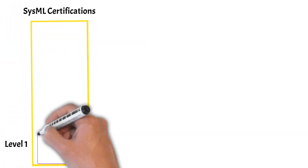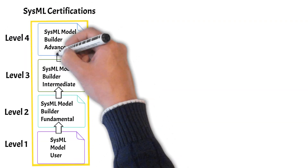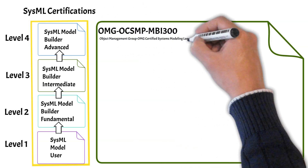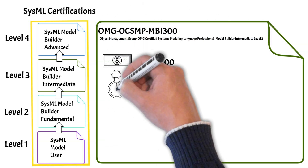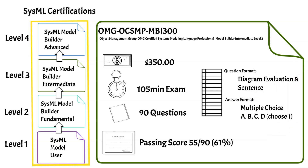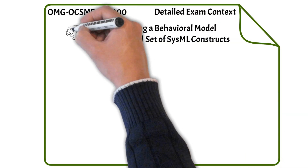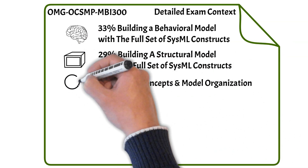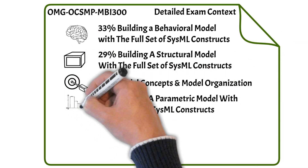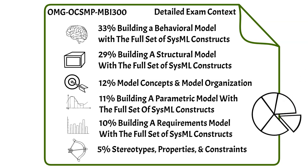After passing levels one and two, you can take the Model Builder Intermediate level three exam. The format is the same as level two — 105 minutes and 90 questions — but the passing score is lower at 61%. This exam is significantly more difficult than levels one and two. The breakdown is: 33% building a behavioral model, 29% building a structural model, 12% model concepts and organization, 11% parametric modeling, 10% modeling requirements, and 5% stereotypes, properties, and constraints.